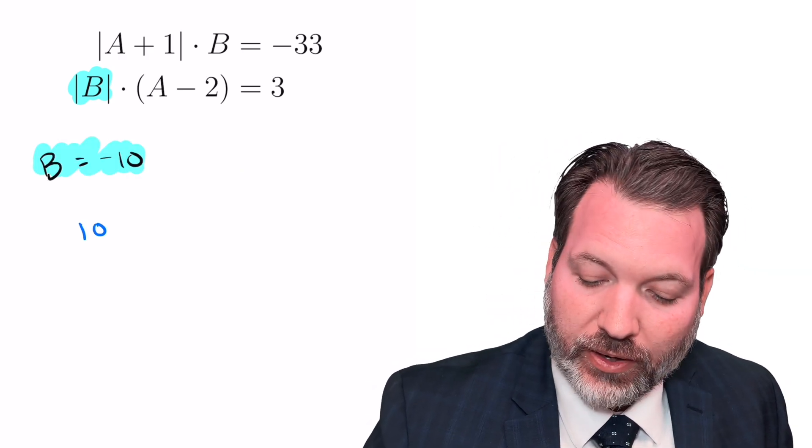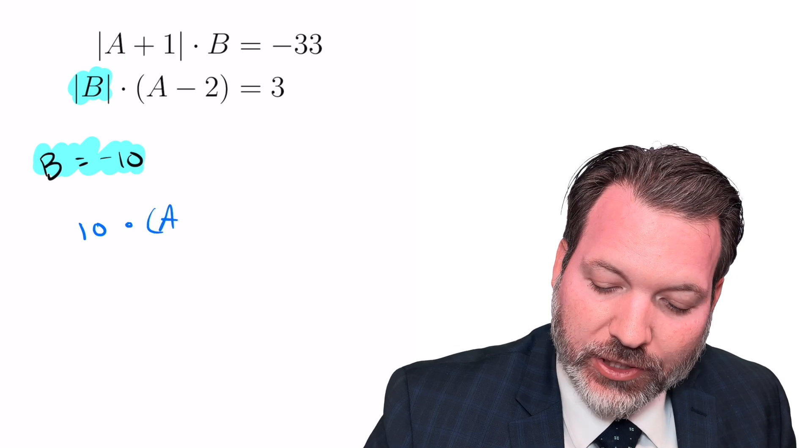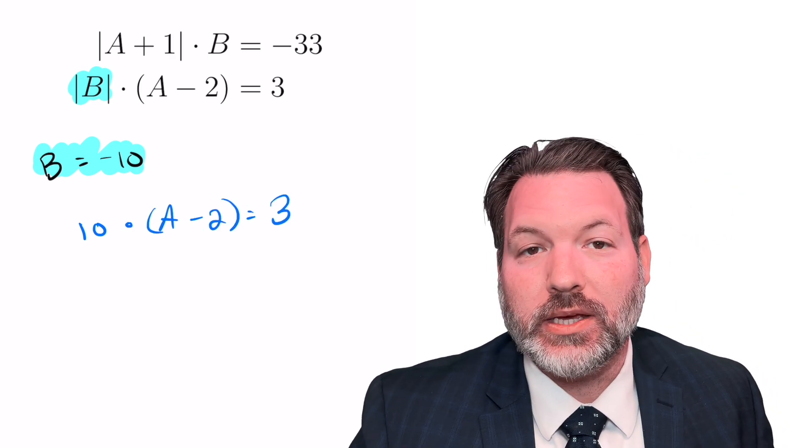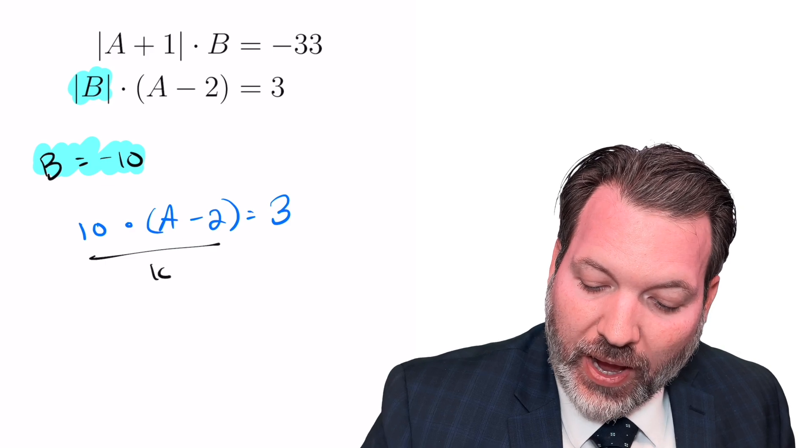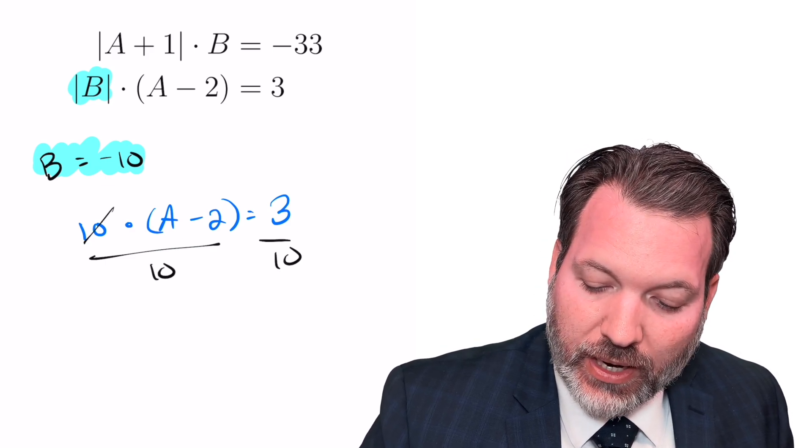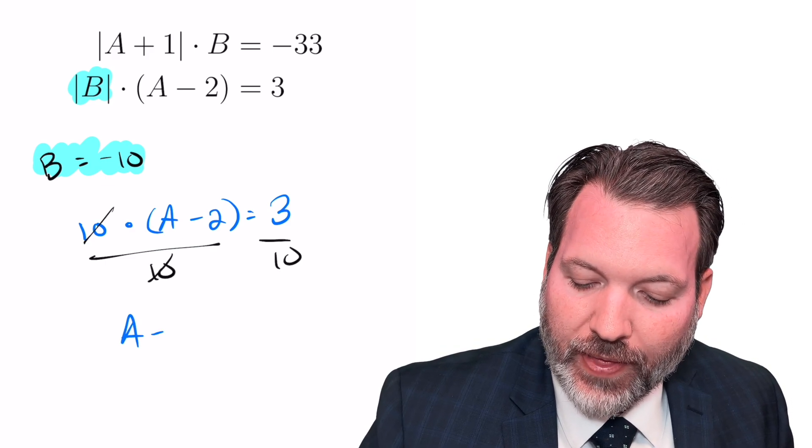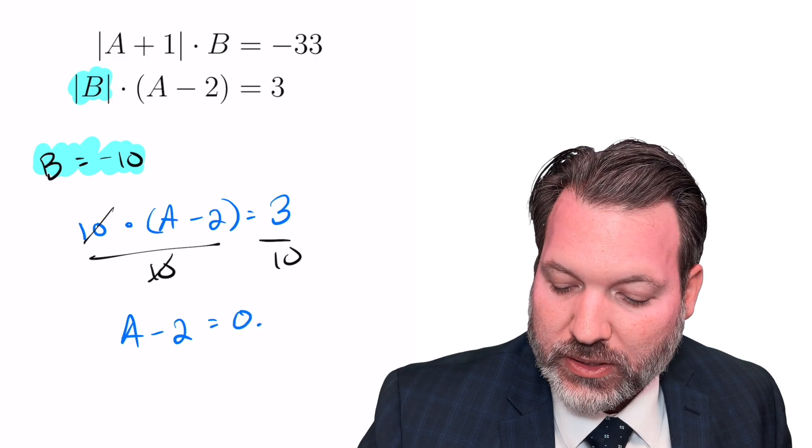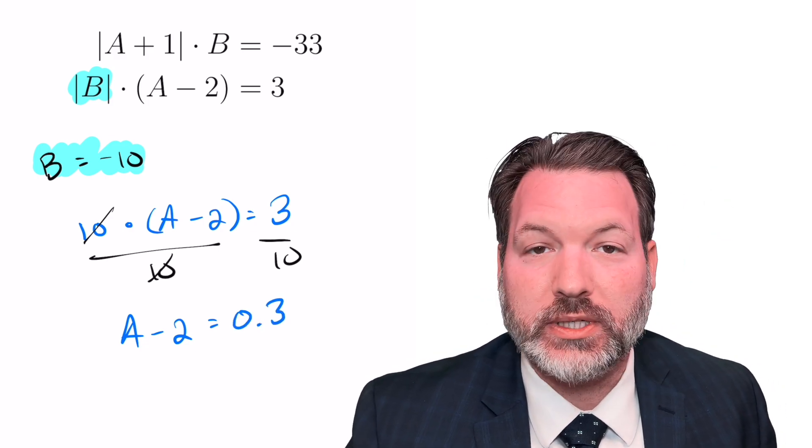If b is negative 10, the absolute value of negative 10 is 10, and so it's actually 10 times a minus 2. That's equal to 3. We can divide both sides of this equation by 10 to get rid of the 10 part, and that leaves us a minus 2 must equal 3 tenths, or 0.3.